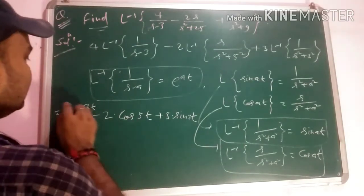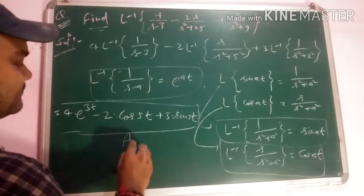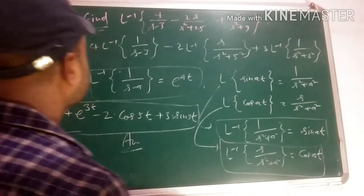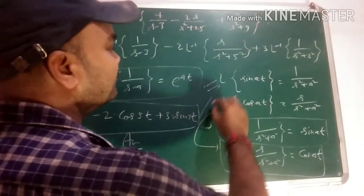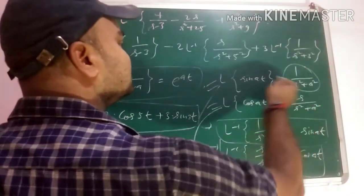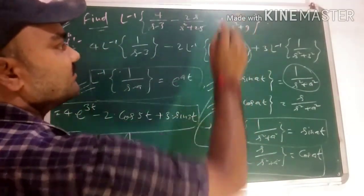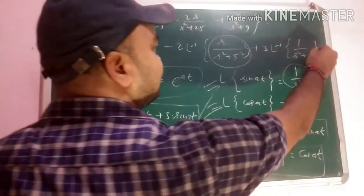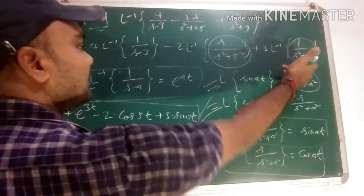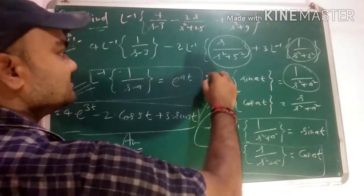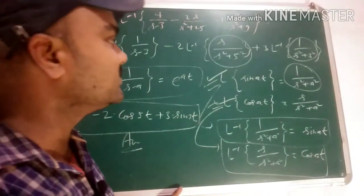So the final answer is: 4·e^(3t) - 2·cos(5t) + sin(3t). This is our answer. To solve such problems, it is necessary to remember all the Laplace transform formulas. By recognizing the form of each term — whether it's an exponential, sine, or cosine — we can identify the inverse.